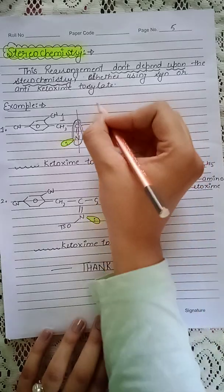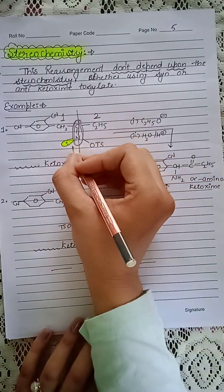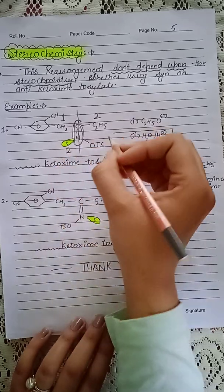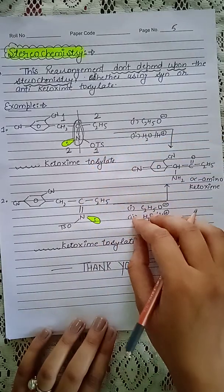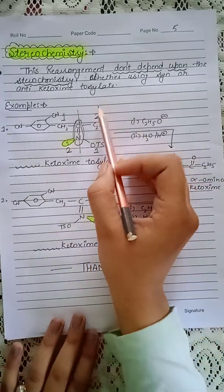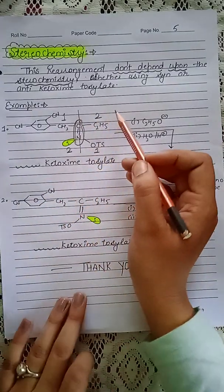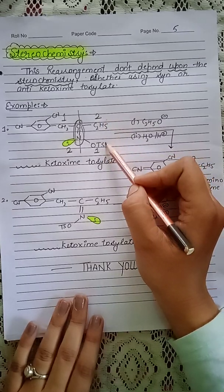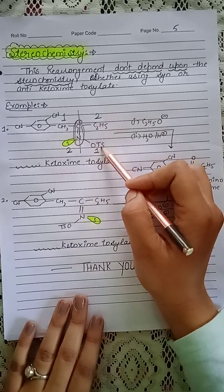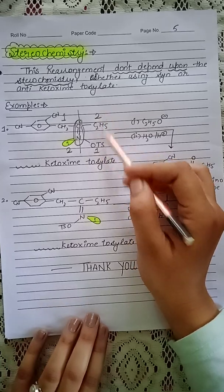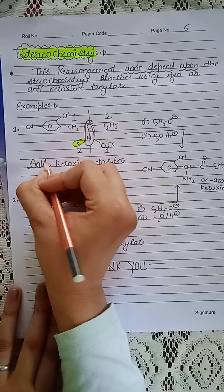Looking at the upper portion, the substituent which is bigger is given first priority and the smaller group is given second priority. In the lower section, the lone pair is always given second priority, and the other group on the same side is given first priority. If the priority order is the same on both sides, it is syn ketoxime tosylate; if the priority order is different, it is anti ketoxime tosylate.